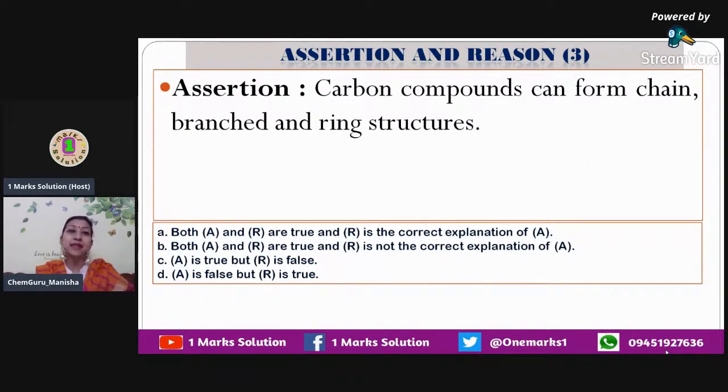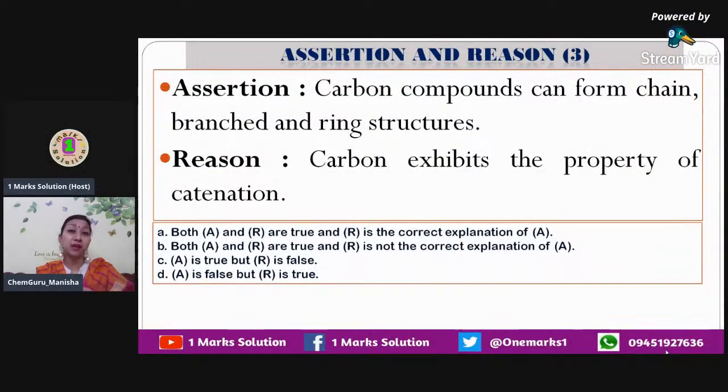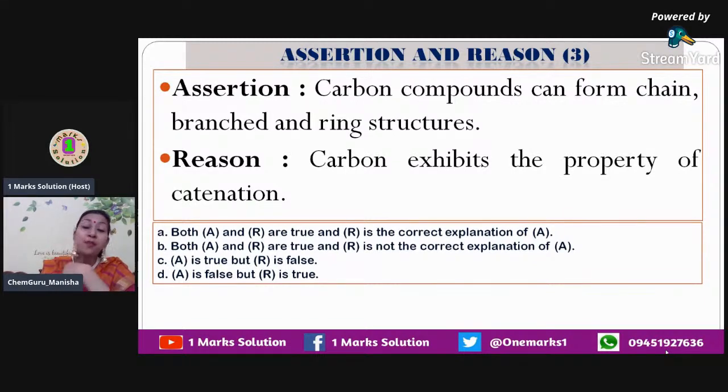Next statement: carbon compounds can form chain, branch or ring structures. This is a very good property of carbon which we understand as catenation. Catenation is when one particular carbon can bind to another carbon — a carbon-carbon chain can be formed in a chain, a branch, or a ring. So carbon compounds can definitely form chain, branch or ring structures, and that's because of a property known as catenation.